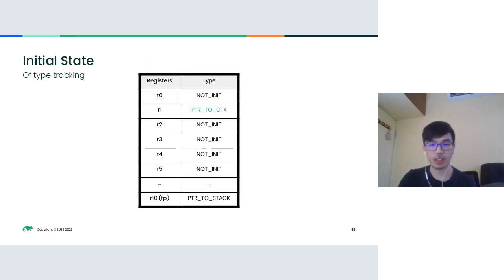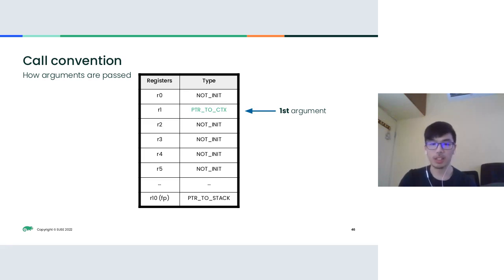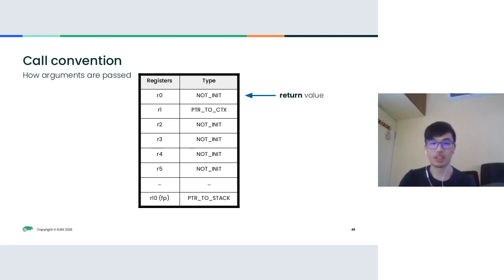When the verifier starts its analysis, it initializes the state of each register. R1 is initialized as pointer-to-context, because pointer-to-context is the argument given to the BPF program, and the BPF calling convention mandates that the first argument is passed through R1. Additional arguments are passed through R2, R3, R4, and R5, and the return value goes through R0.